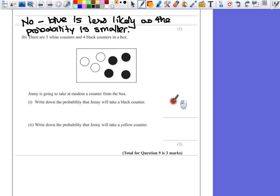We know there are four black counters, and that's out of the total, which is 7. So the probability is 4 over 7.